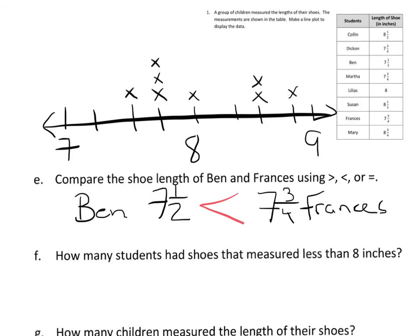And then finally, how many students had shoes that measured less than eight inches? On this, the plot comes in handy. Here's eight. How many are less than eight? Well, you just count what's remaining here. So I have this section of shoes, which would be four. So type that out as a statement. Four shoes are less than size eight.